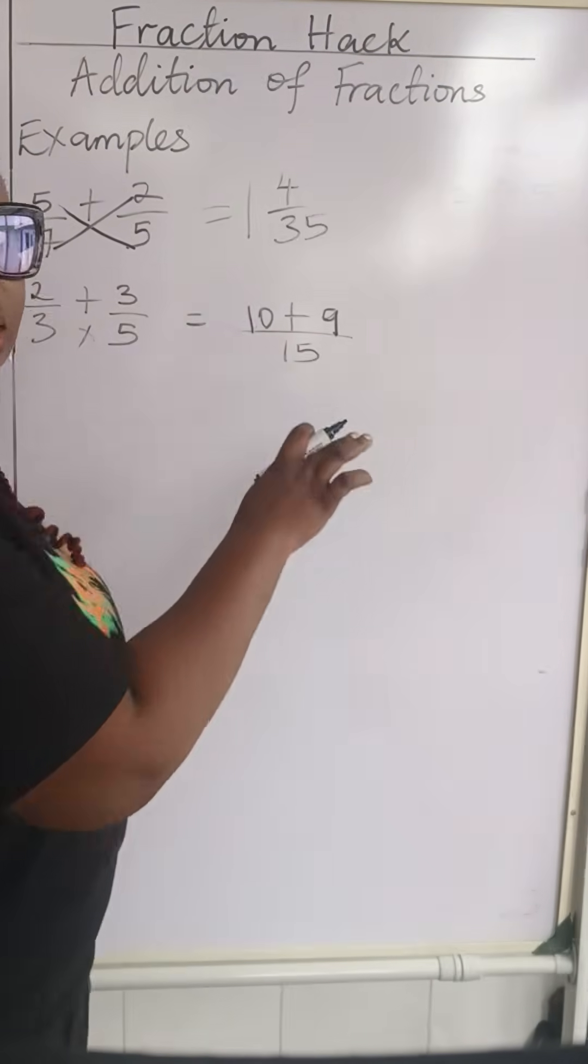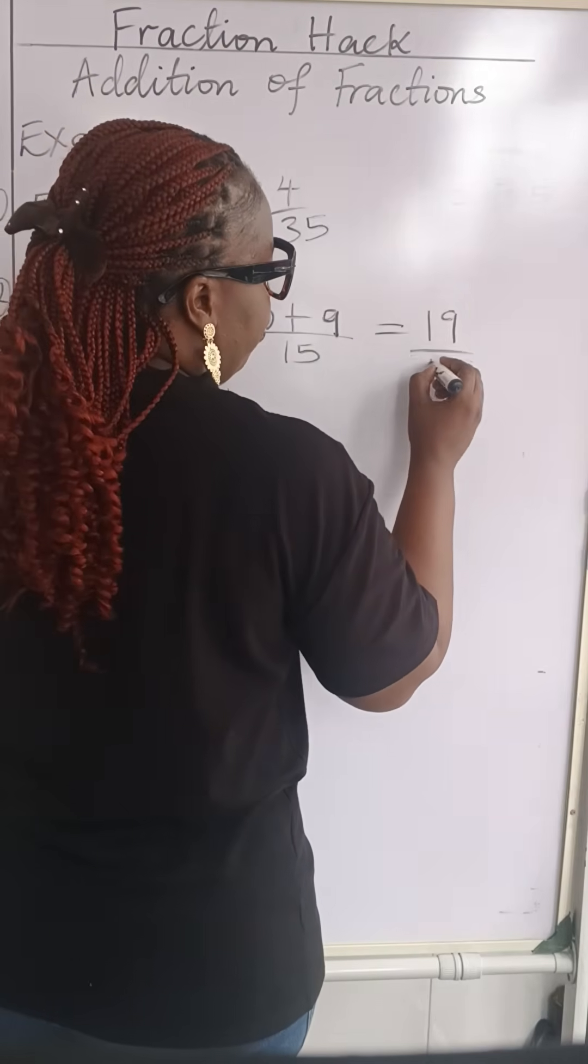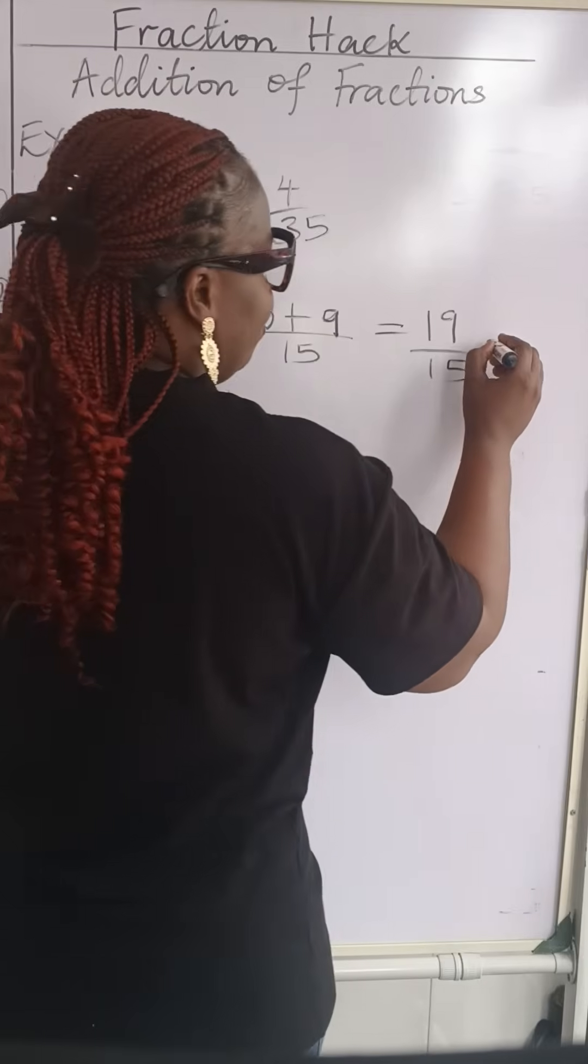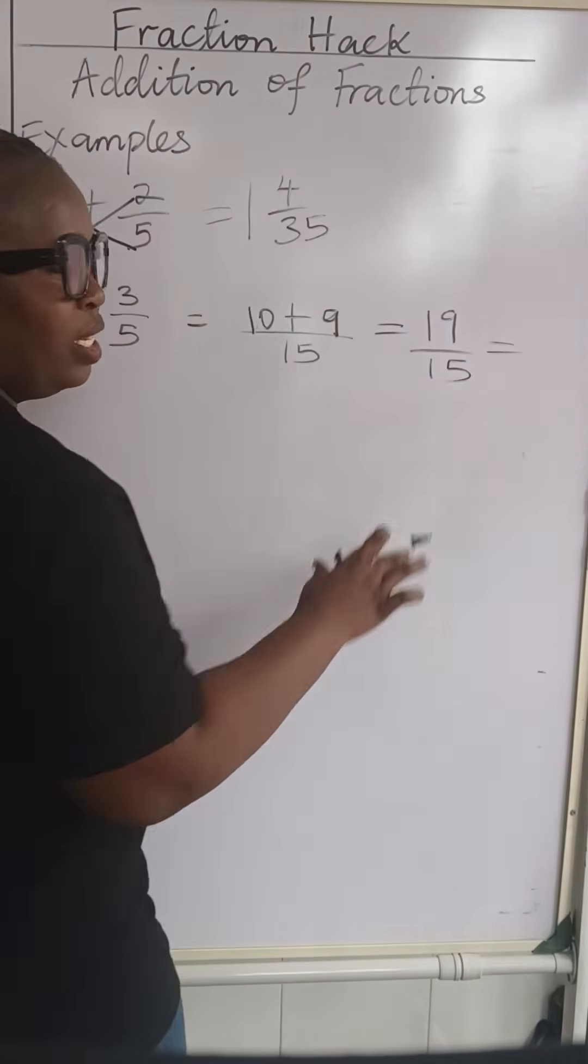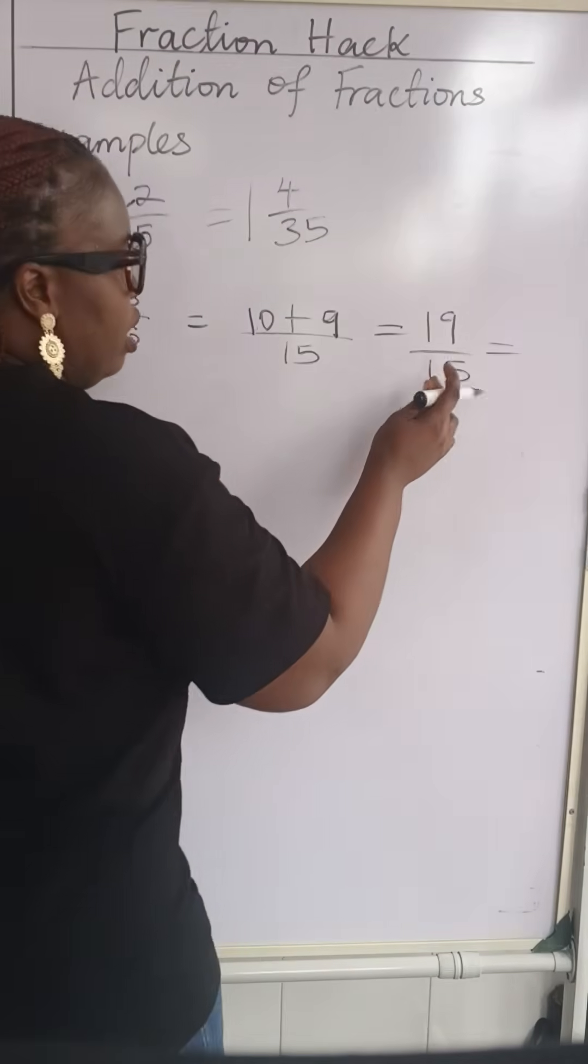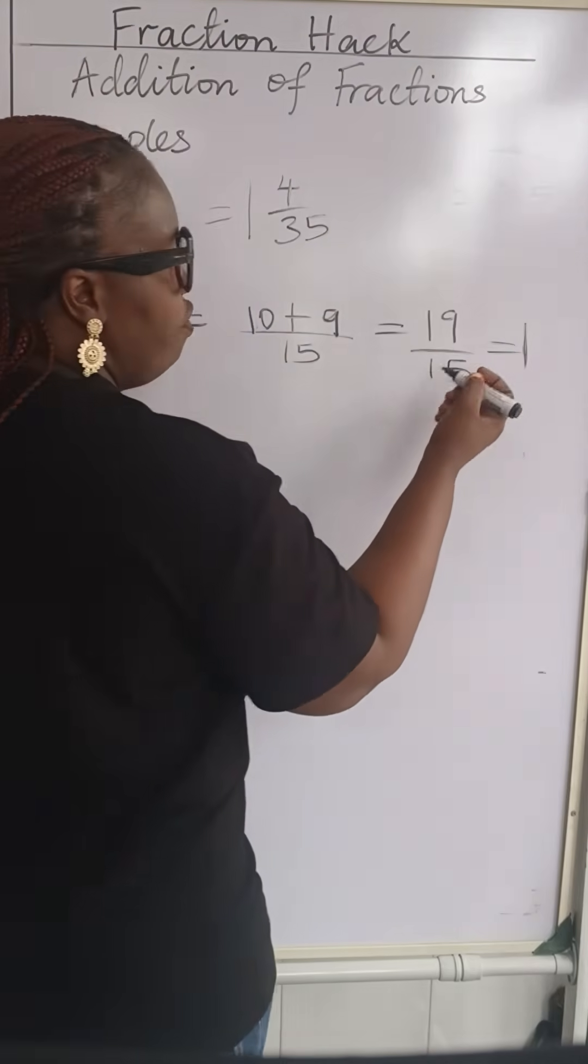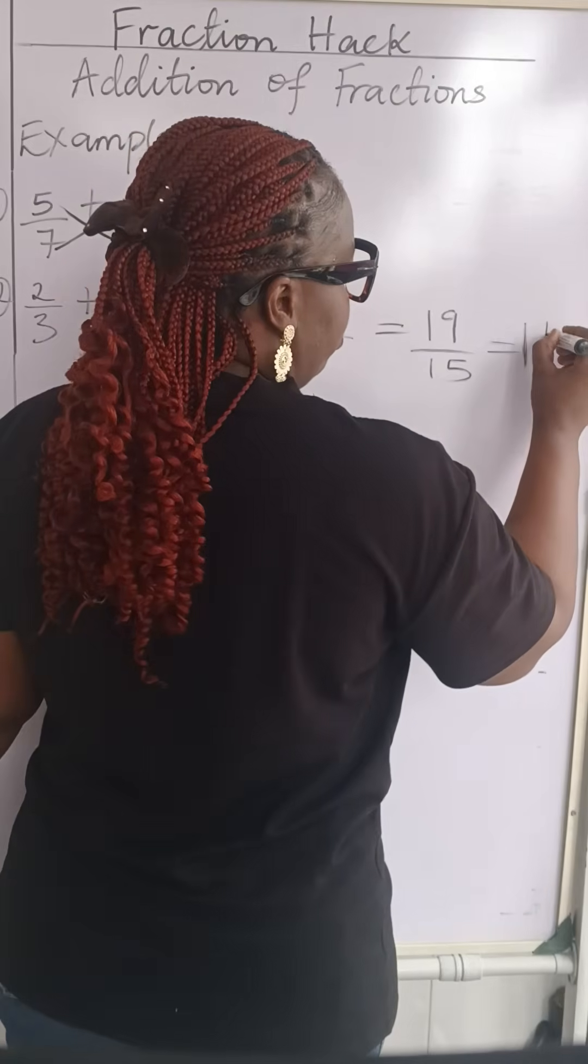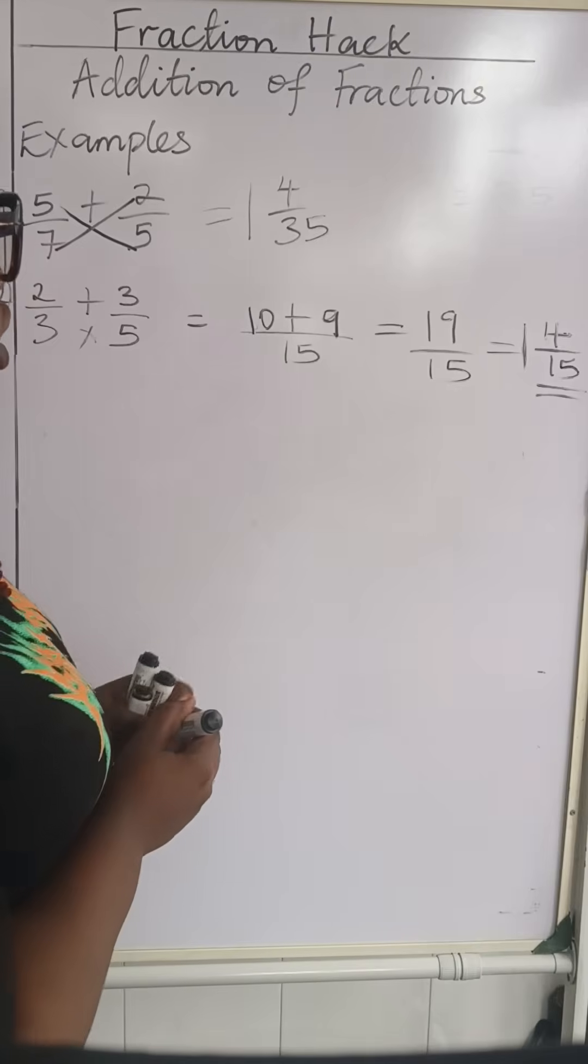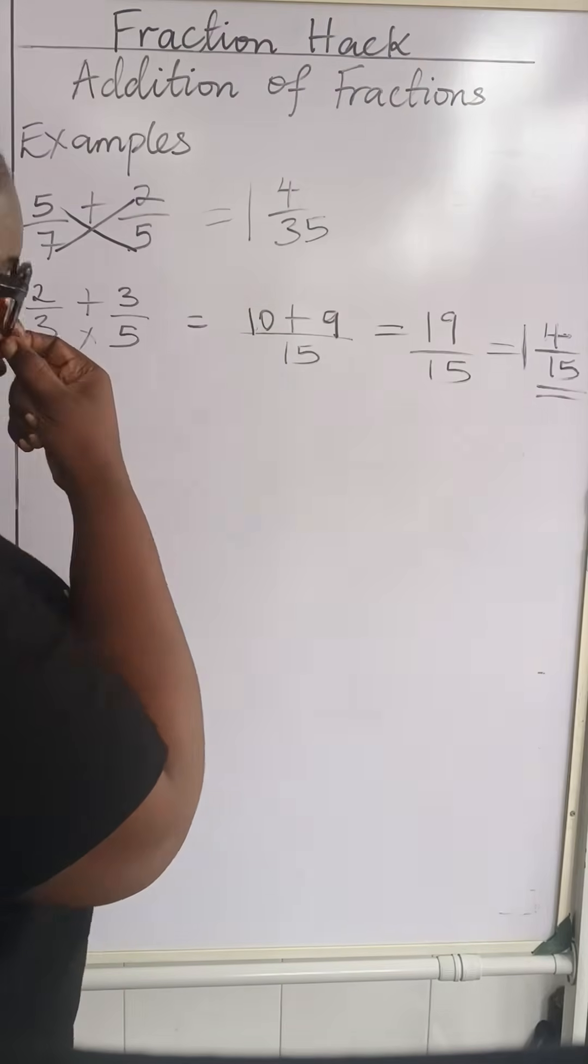So we have achieved this. Now we add, 10 plus 9 will give us 19, 19 over 15. And this one too is also an improper fraction. So we have to put it in a mixed fraction. You will need your answer like this because your examiner will not mark it. You will not get your full mark. Now we'll have 15 going there, it will give us a whole number. 19 take away 15 is 4. And we are going to have 4 over 15 as the final answer, 1 whole number 4 over 15. If you multiply it out you will still go back to 19 over 15, which is an improper fraction.